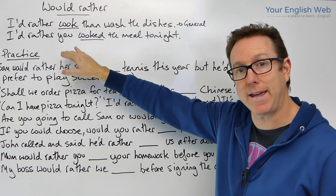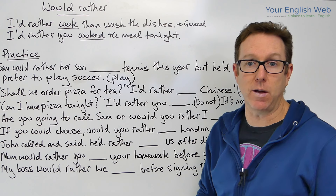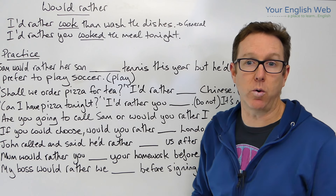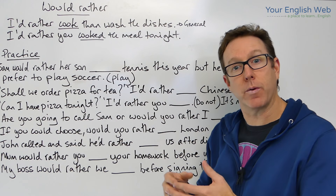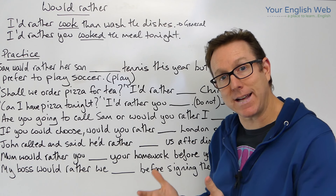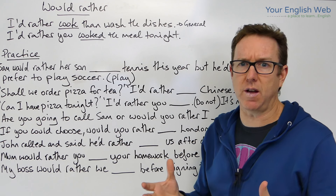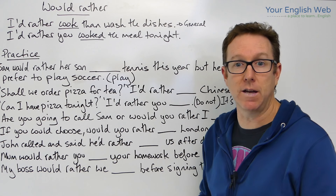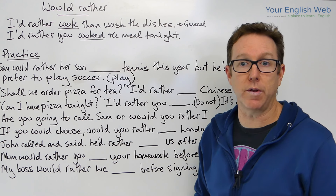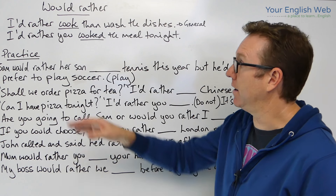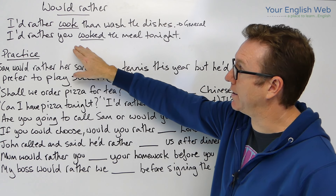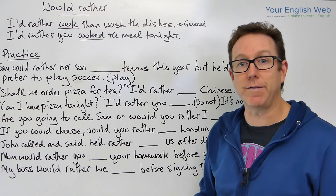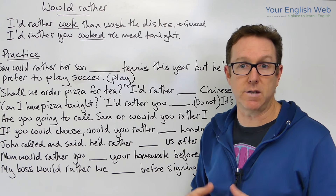Today's lesson is looking at 'would rather' and we're looking at two different structures that it can take: the 'would rather' infinitive structure, and 'would rather' with a past tense. That past tense is not a past meaning — it's a future or present meaning, called the unreal past.